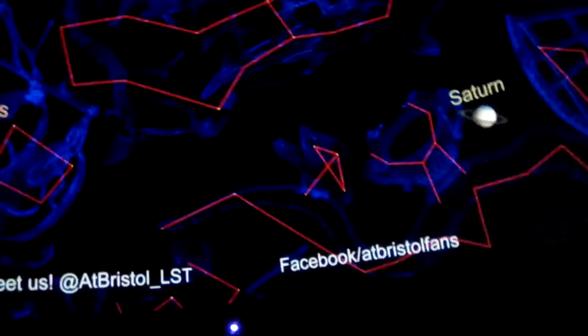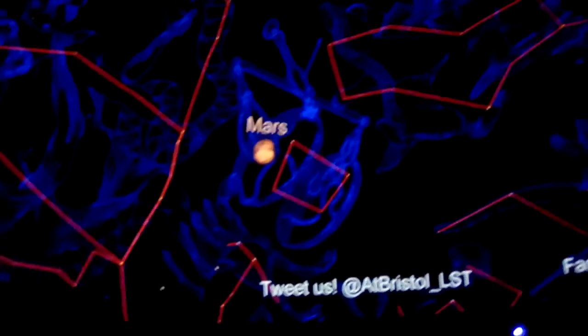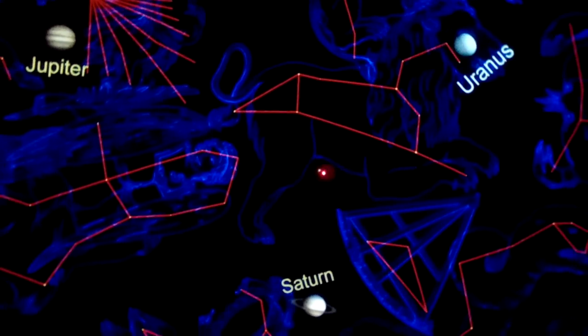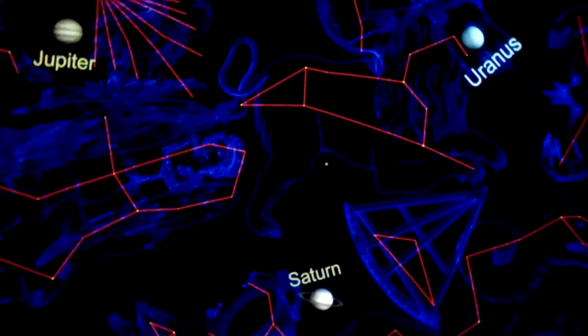I mentioned some planets we can see in the night sky at the moment. If you go over here, this really bright object is actually Jupiter. And you can see it very clearly in the night sky at the moment. Even from the city, you can see it.